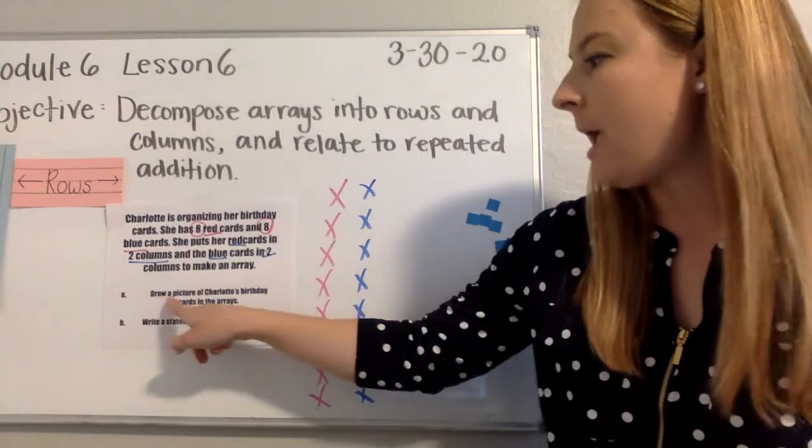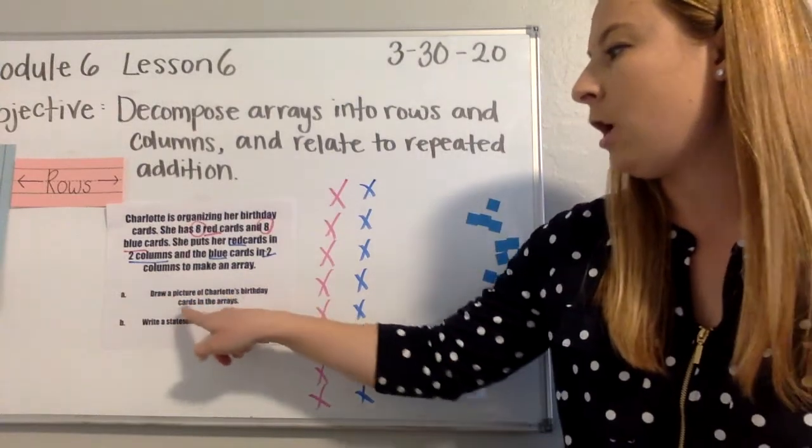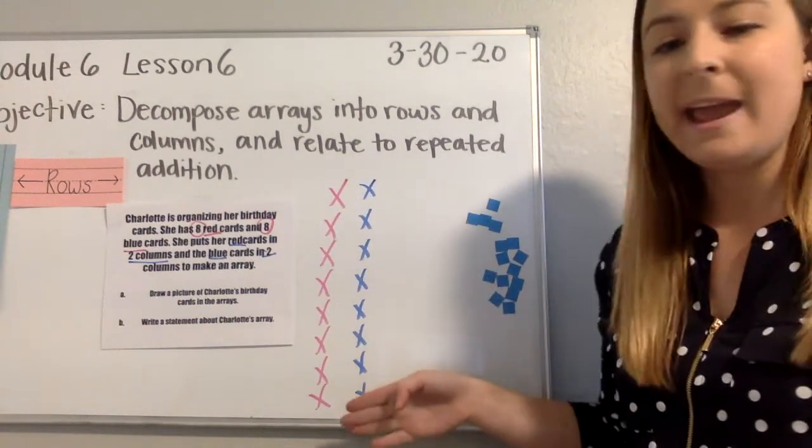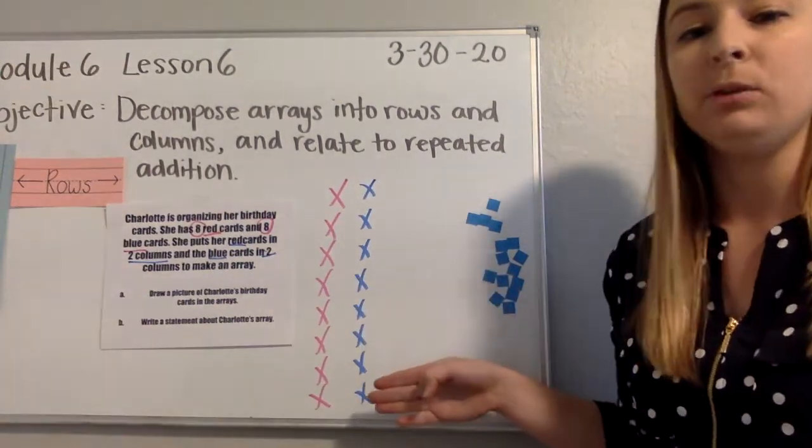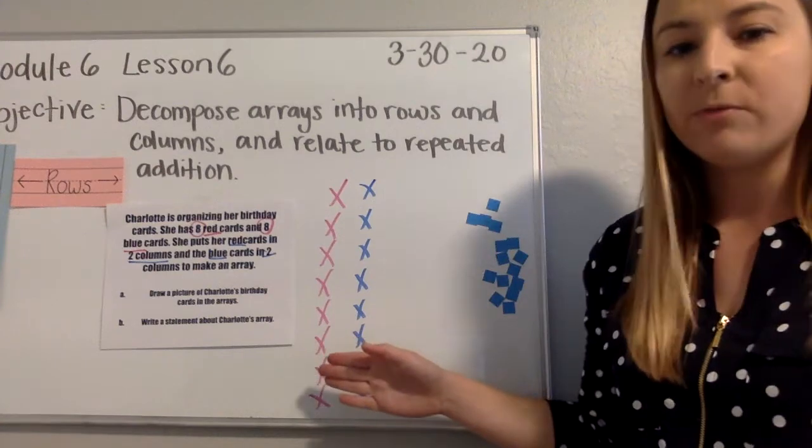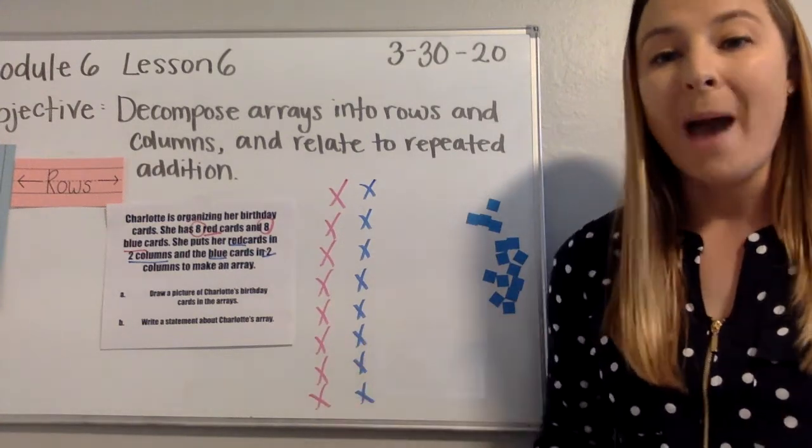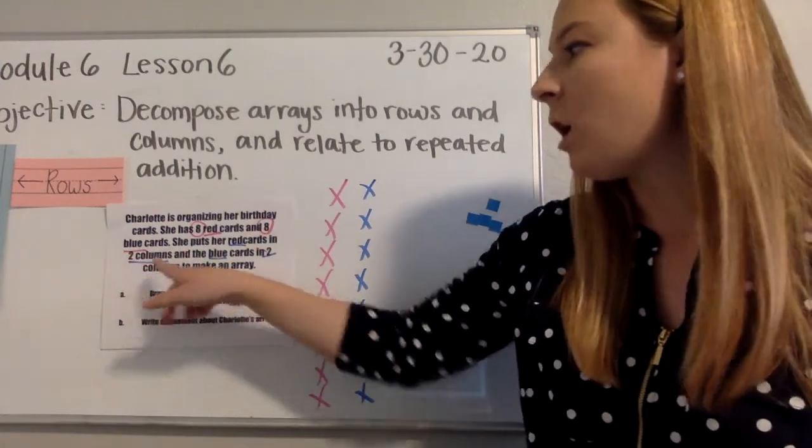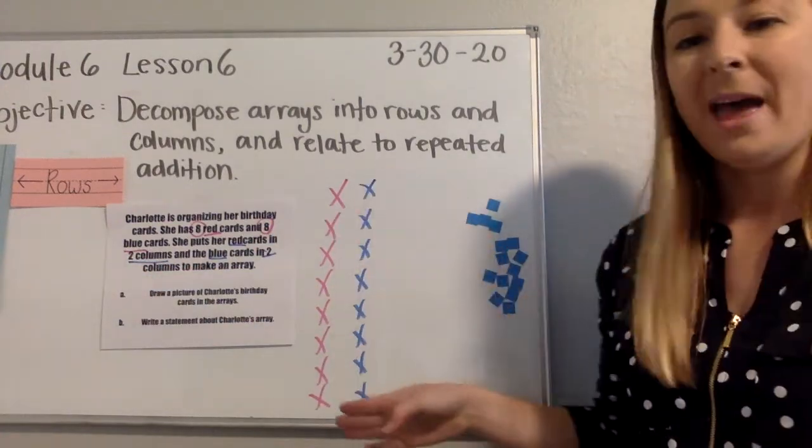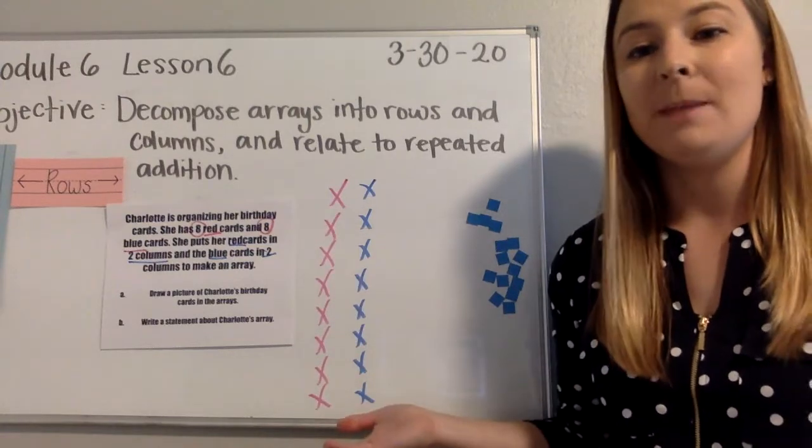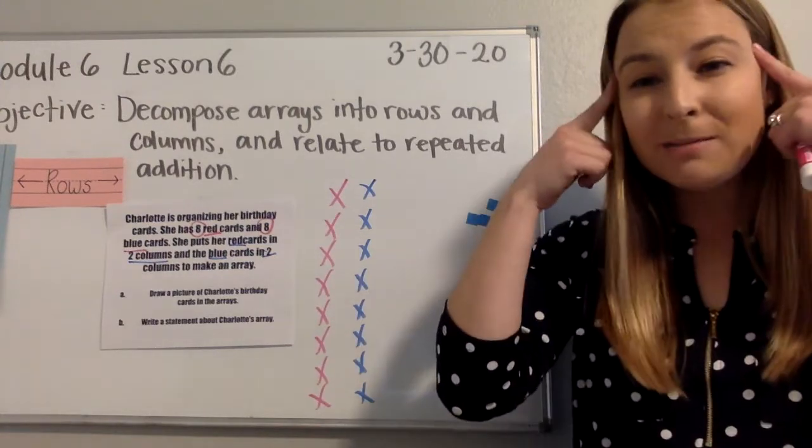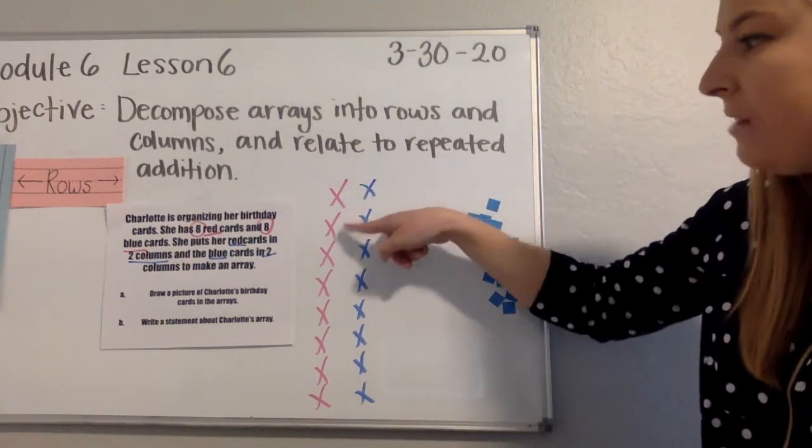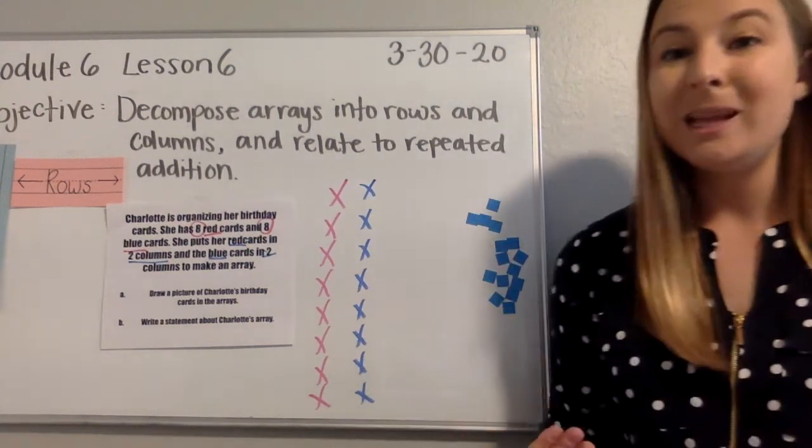Part A says, draw a picture of Charlotte's birthday cards in the arrays. What I have here so far are her eight red cards and her eight blue cards. I have one column of red and one column of blue. But if I go back to my word problem, it tells me that eight red cards are in two columns, not one, which means that I can't leave them in one column. And if I'm using my math thinking, I know my columns have to be equal. So I'm going to have to take the eight red cards and split them up somehow.